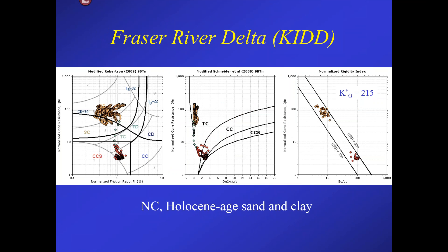Let's look at some examples. The Fraser River Delta in Vancouver — mostly normally consolidated Holocene age sands over clays — is where we did all the early CPT work with Professor Campanella. The yellow dots are the slightly medium dense dilated sands, and the red dots are the sensitive marine clays underneath. The kg value is about 215, right where it should be. Sands plot right up at the top, clays at the bottom. On the pore pressure charts, the clay data plots where it should and the sand data plots exactly where it should — a good example of one site showing the broad ranges.